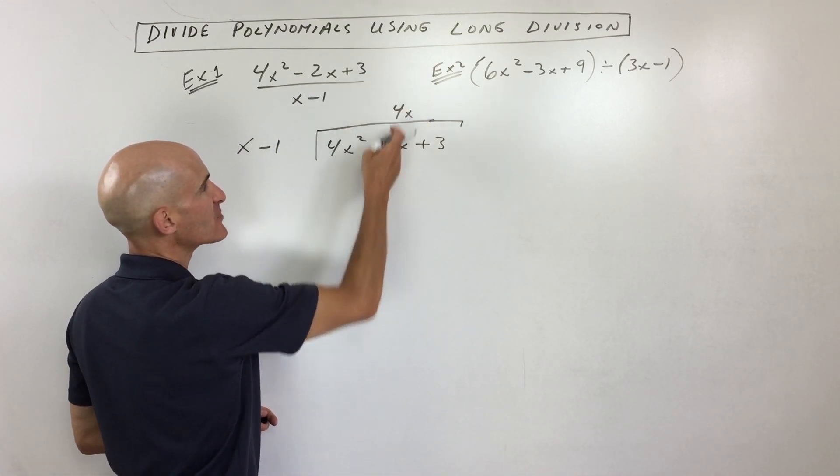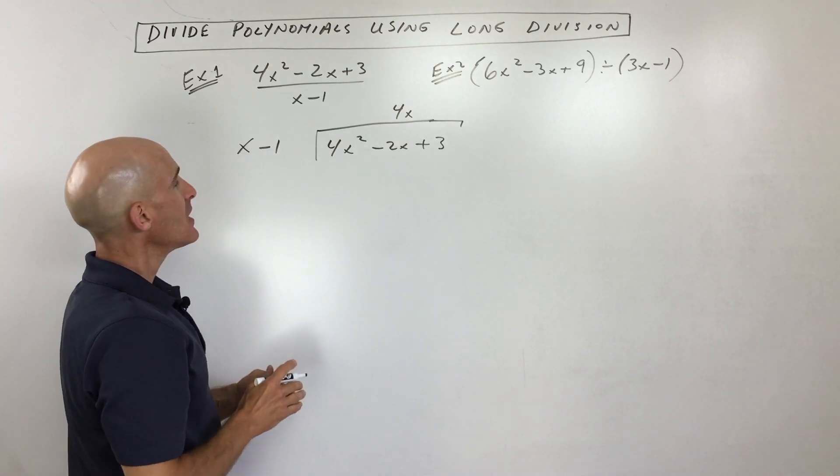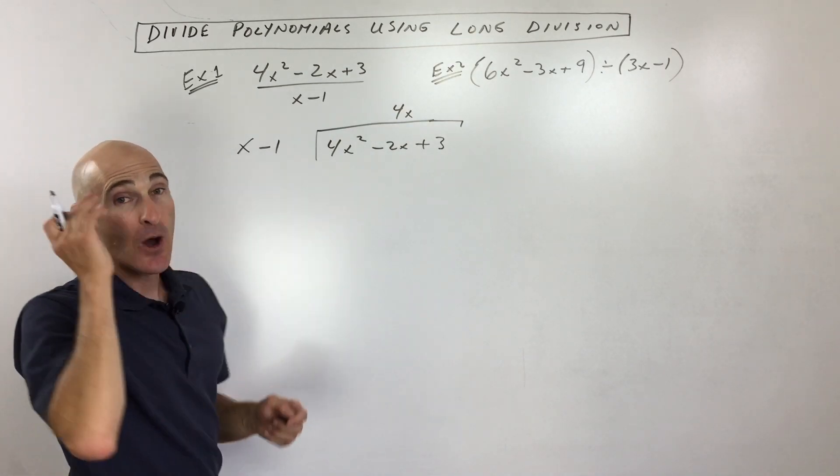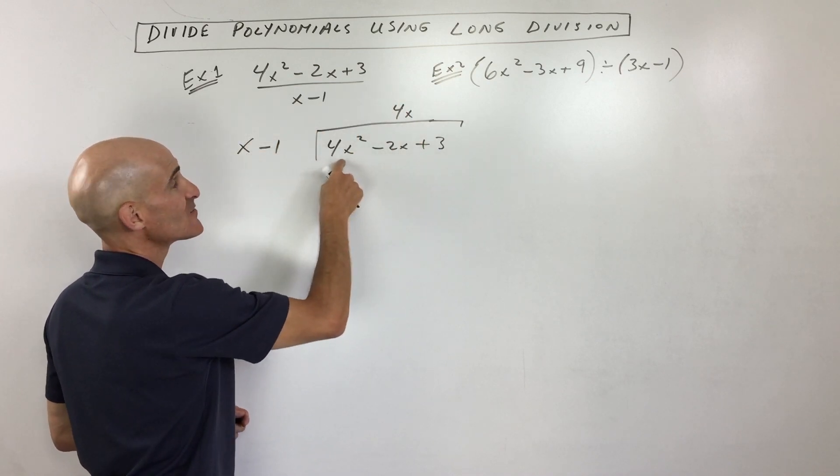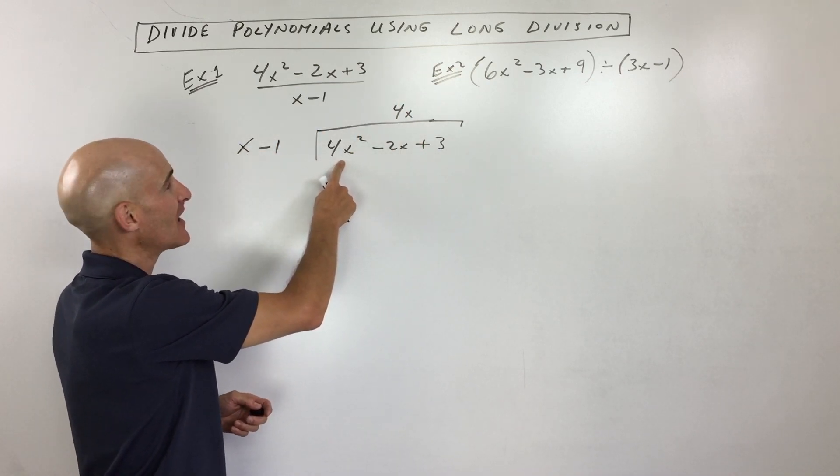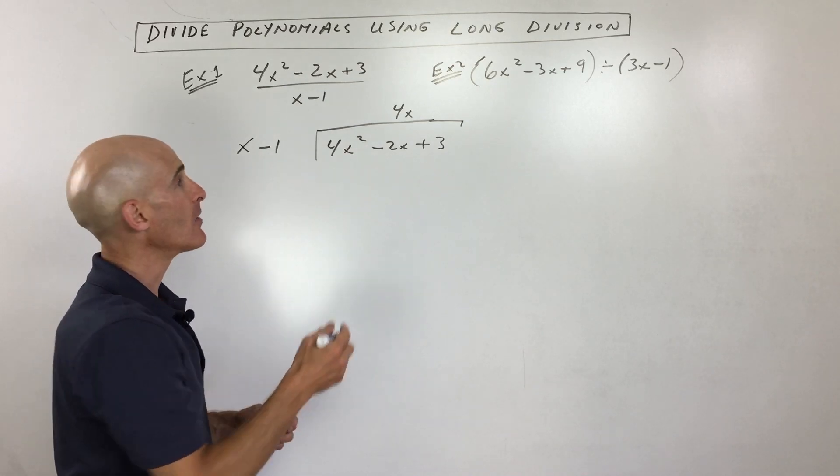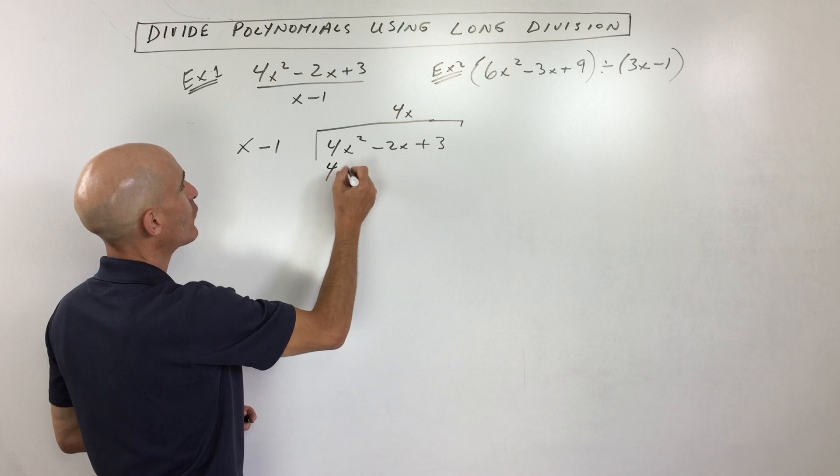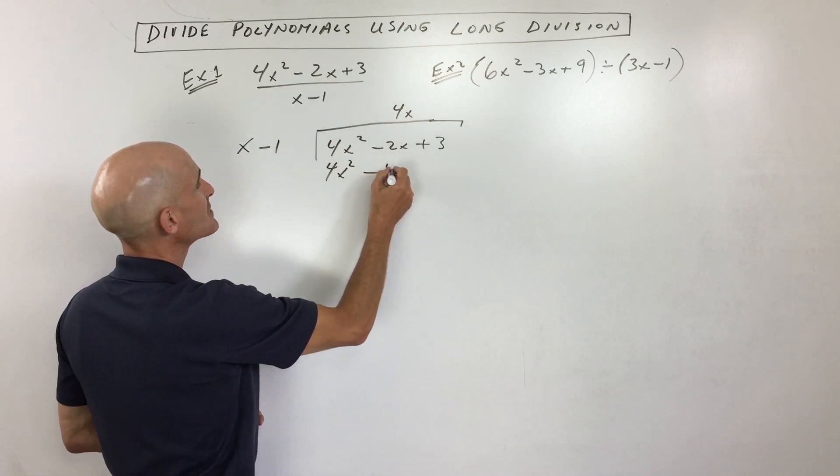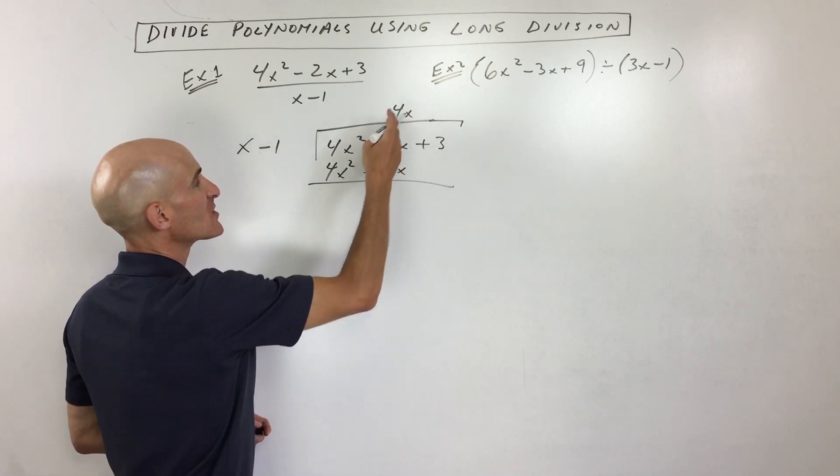And you might be wondering, why did I put it here? I'm just lining the x's up. Another way to do it, and this is how I actually do it, I say to myself, what times x gives me 4x squared? Because what I want to do when I subtract, I want this first term to cancel out. So what we're going to do now is we're going to distribute the 4x. So that's going to be 4x squared minus 4x. And then what we're going to do is we're going to subtract.